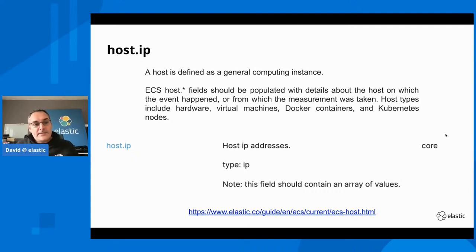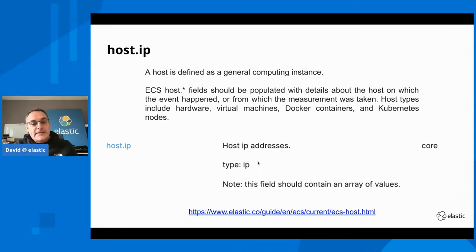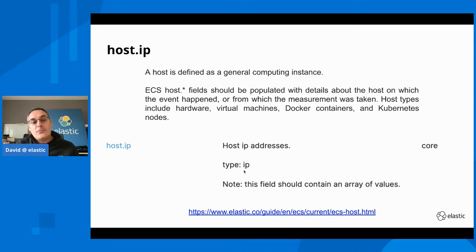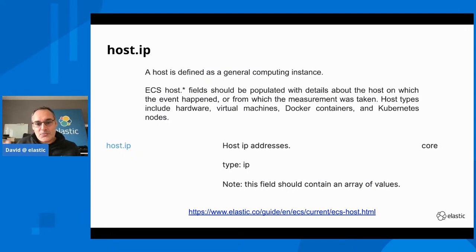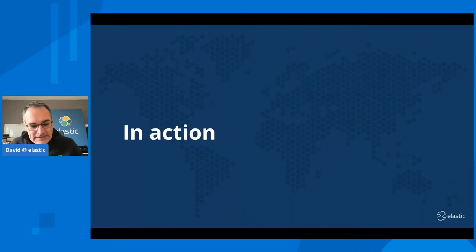In the ECS specification you will find information like the host specification, which contains all the information about the host. If you drill down to host.ip, you can see that it can contain an array of IP addresses. One important thing is that the Elasticsearch type is also set within the specification, so you are sure that values in the host.ip field will be typed as an IP address in Elasticsearch. Let's see all that in action.